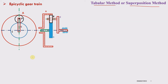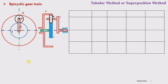To study the tabular method, let us take an example of the epicyclic gear train shown in the figure here. We are taking a very simple example to study the tabular method. The very first step is to draw the table. The table will have a number of columns equal to the number of members in the gear train, plus one column required for writing the steps.